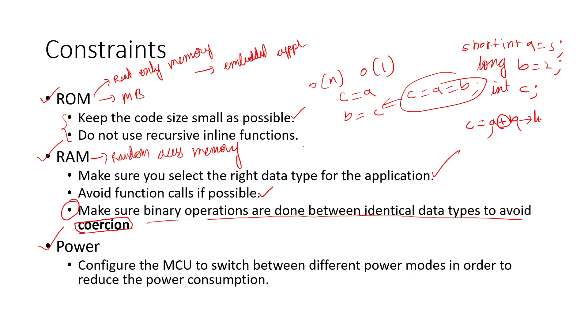It will upgrade a from short to long, then perform addition. The result is also long because both operands are long. Now, equals is also a binary operation. c is int data type, but the answer is long. This int will be upgraded to long - this process is coercion.